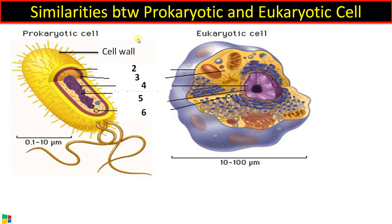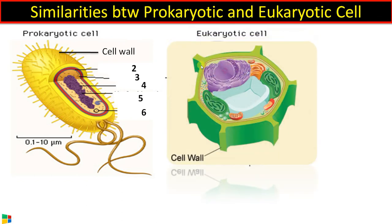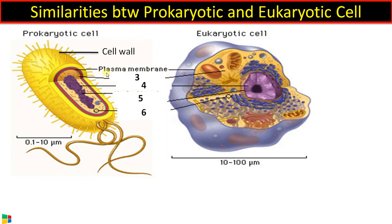The first similarity is regarding the cell wall. In the case of prokaryotic cells, there is a cell wall made up of peptidoglycan in eubacteria, whereas in archaea it is made up of lipopolysaccharides. In animal cells, a cell wall is absent, but in plant cells it is made of cellulose, and in fungi there is a chitinous cell wall.